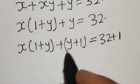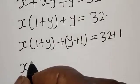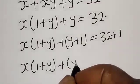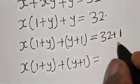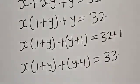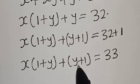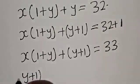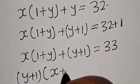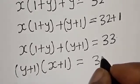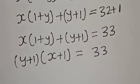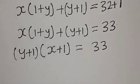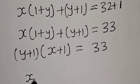Now we have (1 plus y) and (1 plus y). So x times (1 plus y) plus (y plus 1) is equal to 33. Now (1 plus y) is common here, so we bring it out: (y plus 1) times (x plus 1) is equal to 33.